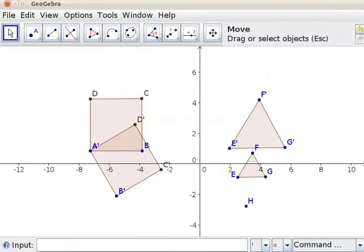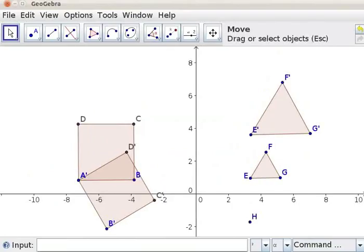This will dilate or enlarge the object twice. Click on Segment between two points and join point H, E, E dash.